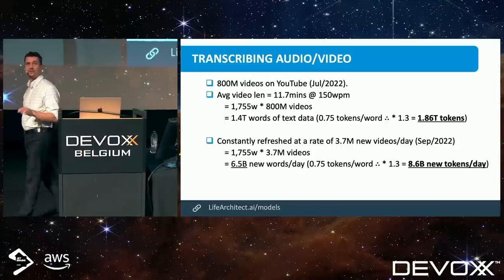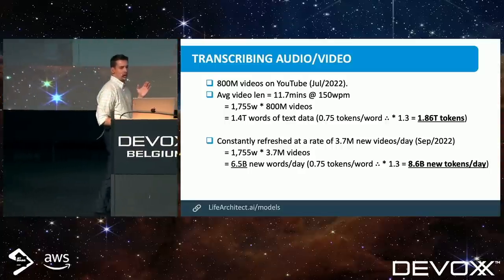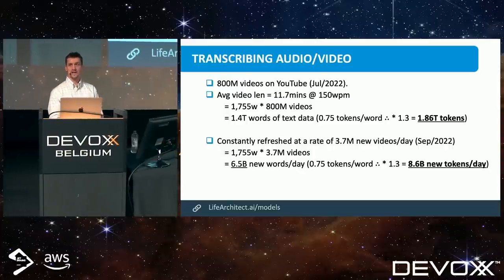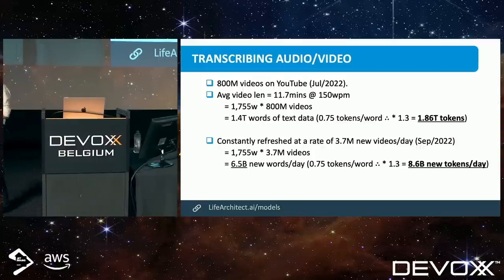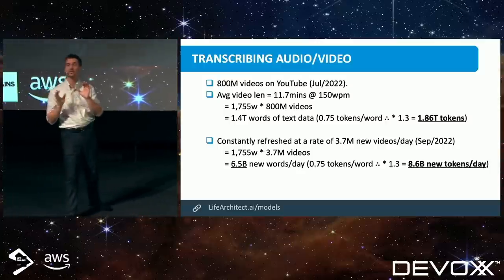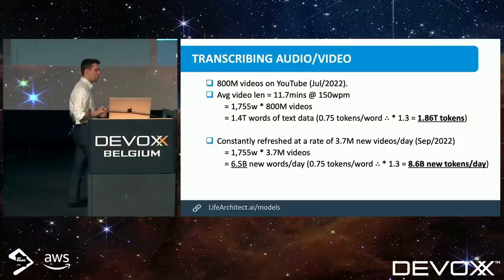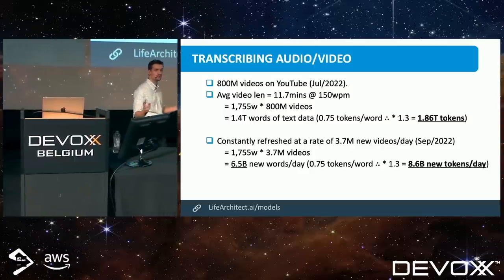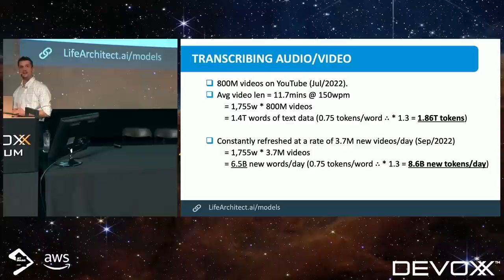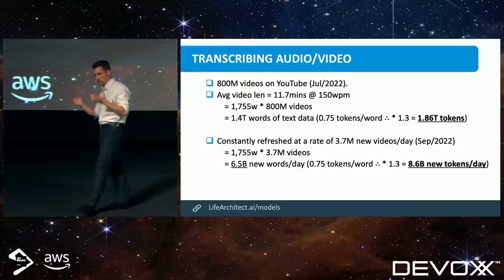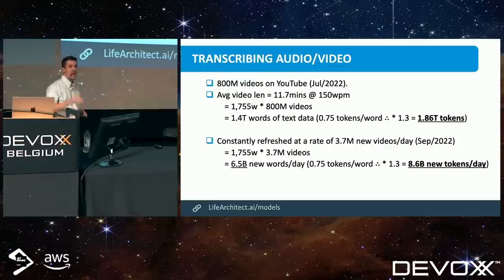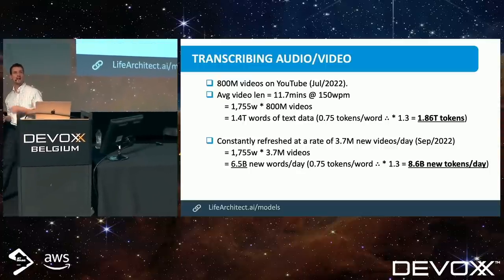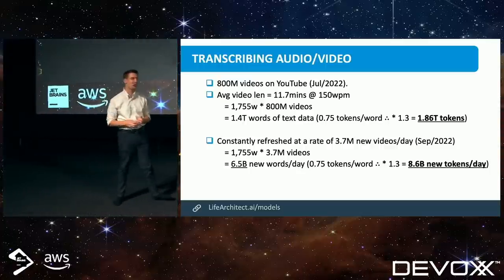YouTube is constantly refreshed — they talk about 3.7 million new videos uploaded every day. DevOps has helped with that. About 6.5 billion new words a day, and if we tokenize that, we're looking at 8.6 billion tokens per day. GPT-3 was trained on 300 billion tokens, but it probably should have been trained on 3 trillion tokens because they were not compute-optimal. DeepMind Chinchilla essentially retaught how we should be doing that with the Chinchilla scaling. If we're aiming for 3 trillion tokens and can use the words spoken on YouTube, that might be a cool way to do things.